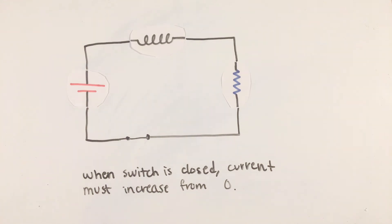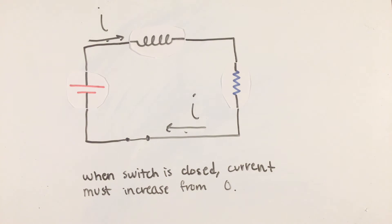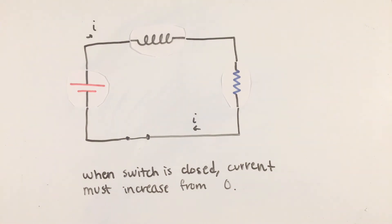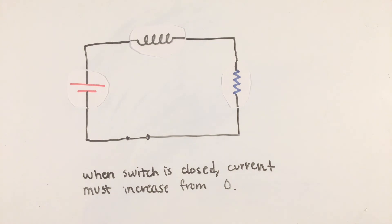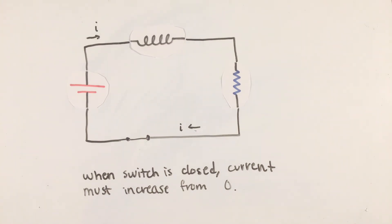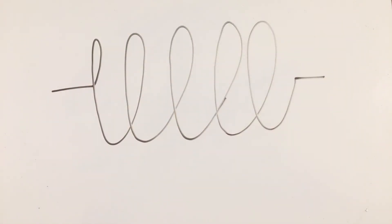Now, while we completely ignored this time of changing current in AP Physics 1, as it's usually rapid or almost instantaneous, and didn't concern us for simple DC circuits, it's precisely this window of time where inductors have an effect on a circuit. Because the current needs to increase from zero to some value, the current is changing.